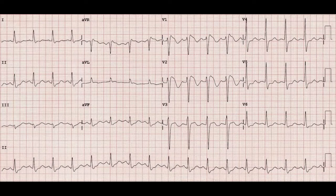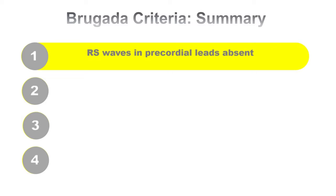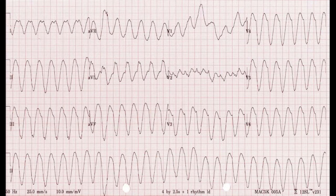We are talking about Brugada criteria. Brugada criteria is a combination of four distinct steps that you can use to differentiate between VT and SVT with aberrancy. The first step is: is there any concordance present in the precordial leads — that is V1, V2, V3, V4, V5, V6?